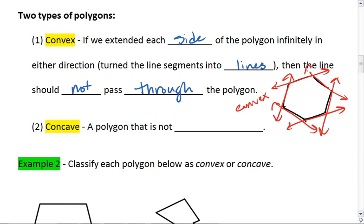Concave polygon is a polygon that is not convex. For example, if I were to draw this polygon here, notice when I extend these two sides, the lines pass through the interior of my polygon. So this one is concave.